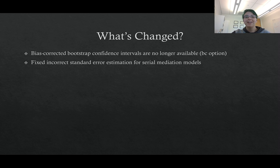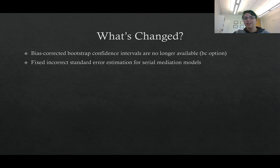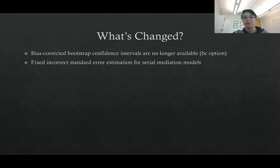In doing these changes, we discovered an error — it's kind of amazing to me that we only found one, but I guess that speaks to the testing process. If you used normal standard error estimates — specifically the normal equals one option — with a serial mediation model, the standard error calculation may have been incorrect. I've only found one person for whom this affected results, but if you have any questions about this, you're more than welcome to reach out to me. We've double-checked everything now and all of these standard error calculations are correct for the serial mediation models.